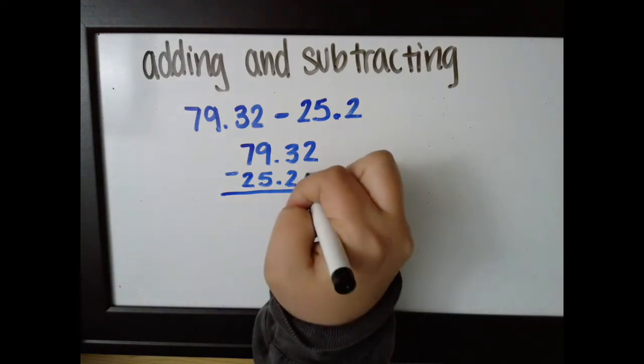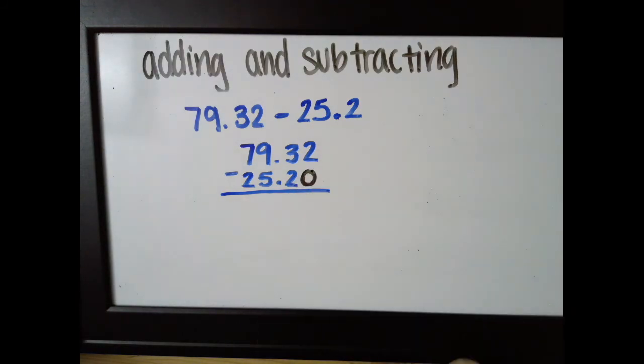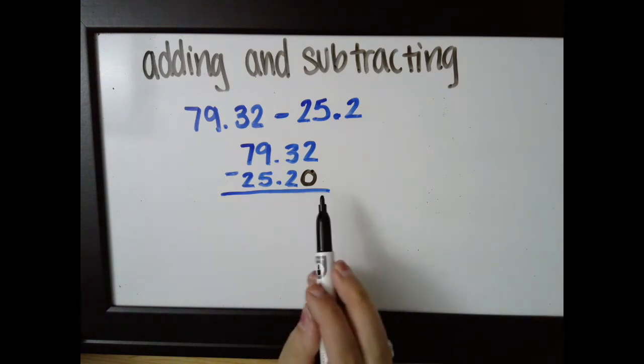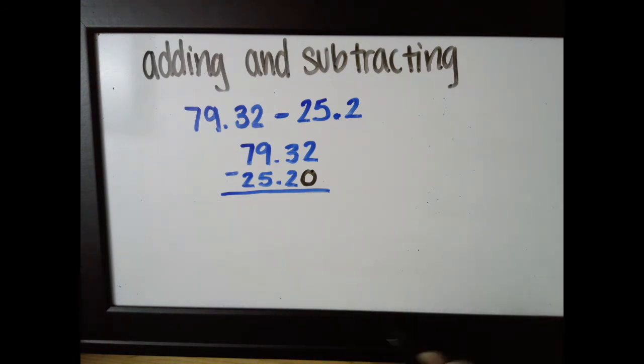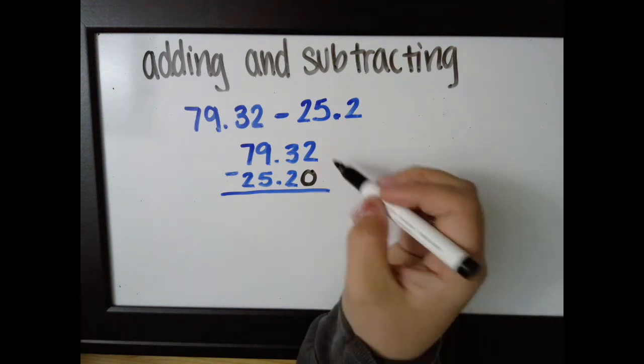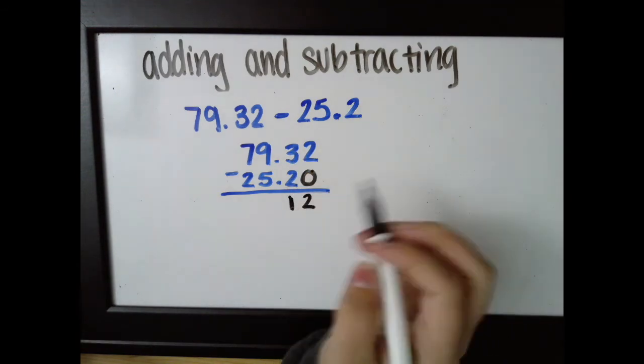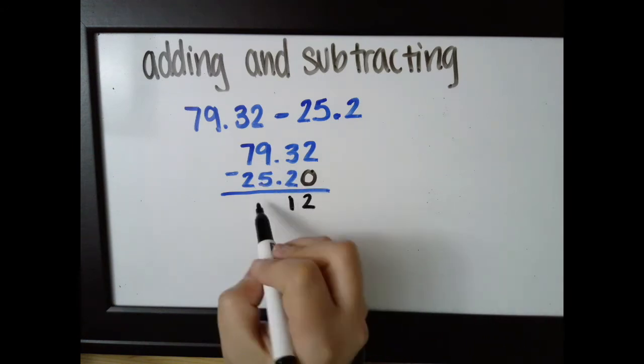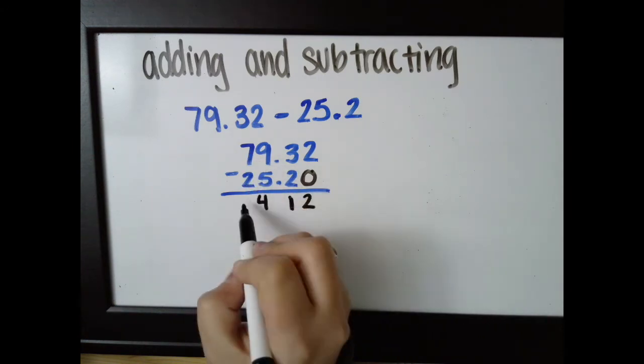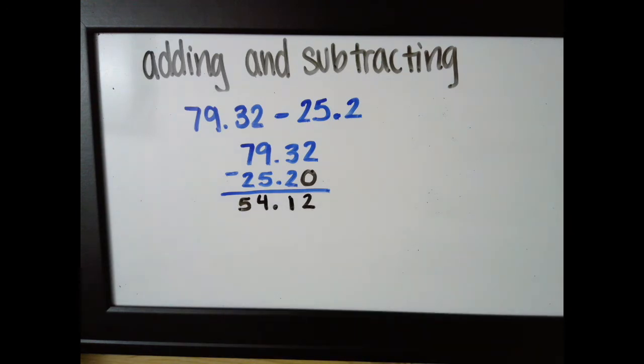Same thing. I can put a zero down here. That's not changing my number in any way because two tenths and twenty hundredths is the same thing. So then I subtract. Two minus zero, two. Three minus two, one. Nine minus five, four. Seven minus two, five. That one didn't have any carrying or borrowing or any of that.